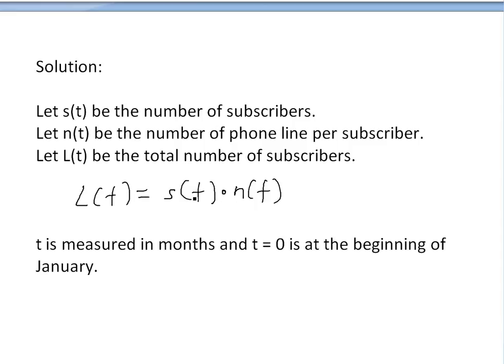If you look at the units, this is basically subscribers times lines divided by subscribers. As you see, the subscribers will cancel. You're just left with lines. So this is the function here.